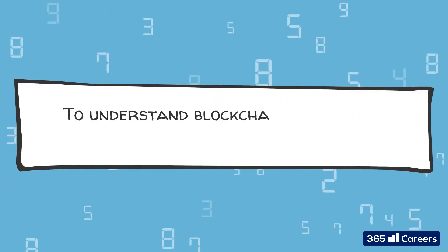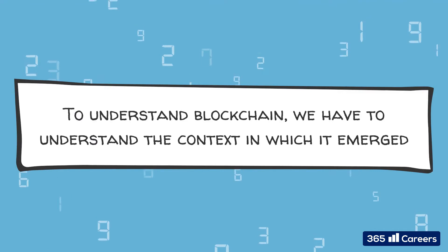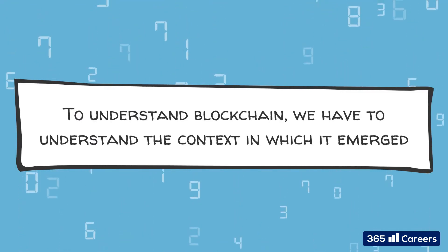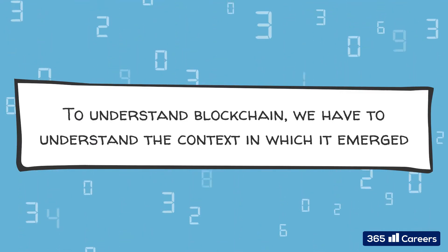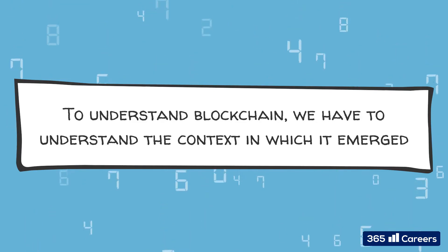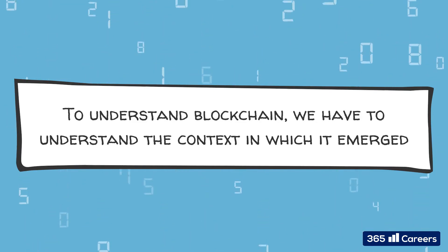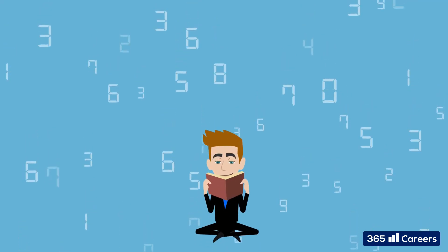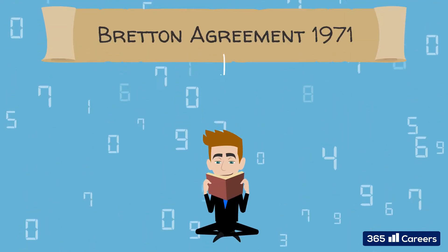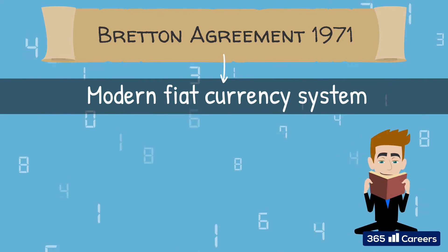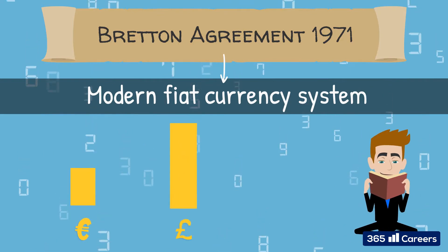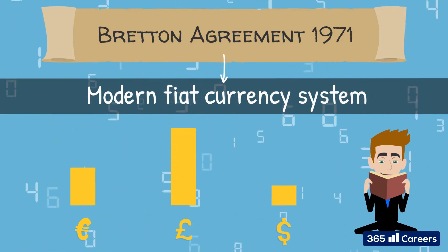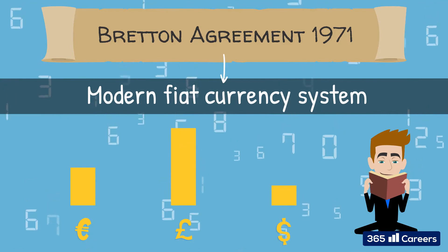Our core goal here is to understand how blockchain functions and why Bitcoin became so popular. However, in order to do that, we need a quick recap of some macroeconomic events that took place in recent history. Since the dissolution of the Bretton Woods Agreement in 1971 and the introduction of the modern fiat currency system, the world has entered a new era of mostly freely fluctuating foreign exchange rates.